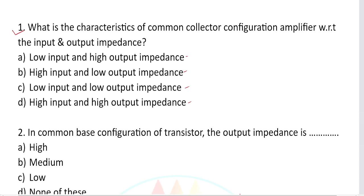Let's look at the input and output impedance for each BJT configuration. For common base configuration: input impedance is low, output impedance is high.